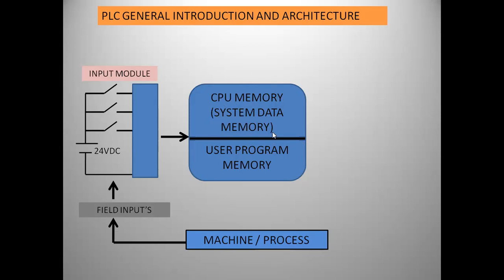The CPU has memory which is divided into two parts. One is CPU memory, also known as system data memory, and the other is user program memory. System data memory means the CPU has some internal files — like the capacity of digital inputs, outputs, analog inputs, outputs, timers, and counters. This range is defined in the CPU memory. It also contains the firmware, which is like the OS version of the PLC CPU. User program memory is where the user can download their program.